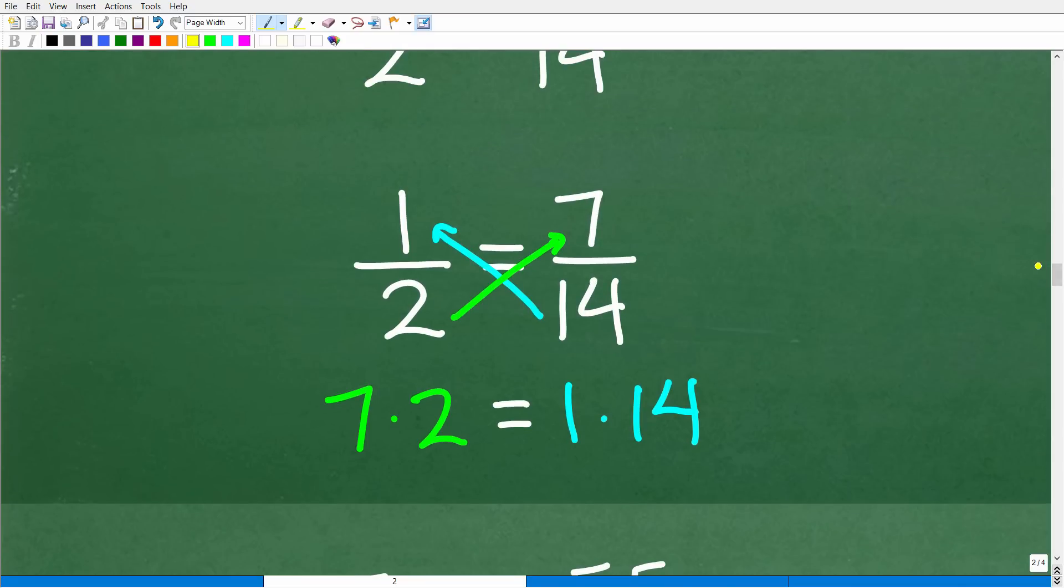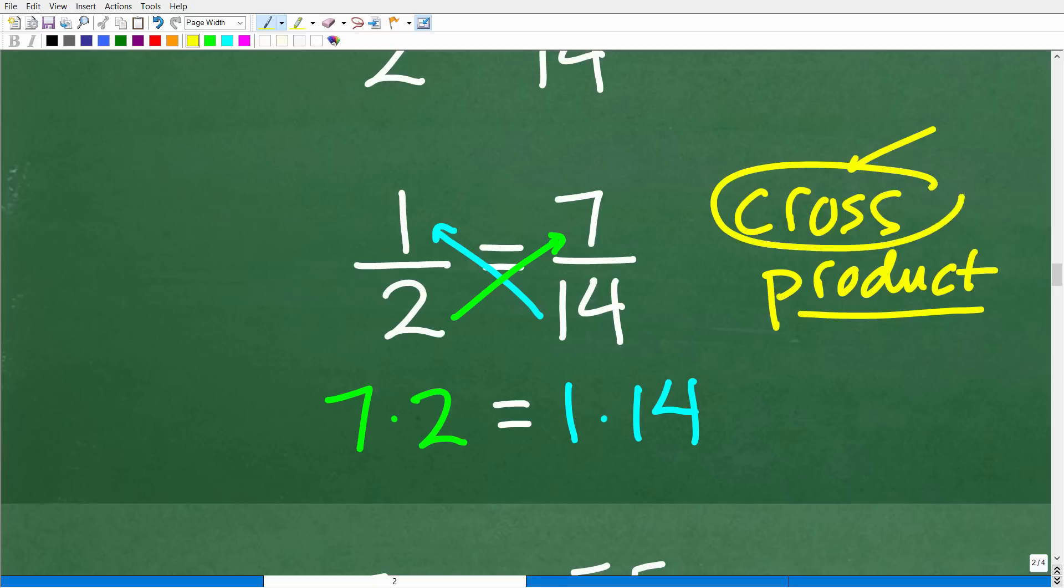So that means we can use something called the cross product. The cross product is always true when you have a proportion, right? Cross product, I'll write this out right here. And this is an extremely important property of proportions. Now, it's not the only property of proportions. There are others, and you'll learn that in more, kind of more advanced math. They're not overly difficult. But really, if you understand the cross product, you should be able to solve all proportion type of problems. Okay, so here is what the cross product is. First of all, let's just read this word. Cross, I mean, are we talking about crisscross? Yes, that's basically what we're talking about. And product means what? Multiplication, correct?